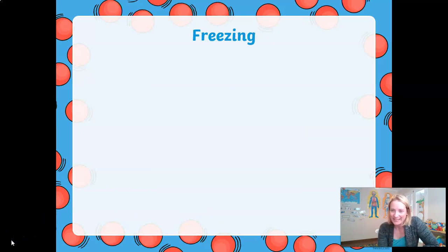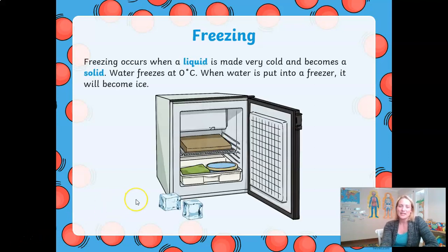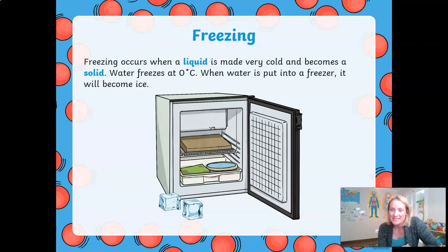Freezing. Earlier I told you that water boils at 100 degrees Celsius, but I wonder if you know at what temperature it freezes. Freezing occurs when a liquid turns into a solid when we make it very cold. Water freezes at zero degrees Celsius — well done if you got that. When water is put into a freezer, it turns into the solid ice, which we need to keep our drinks nice and cool on a hot summer's day.